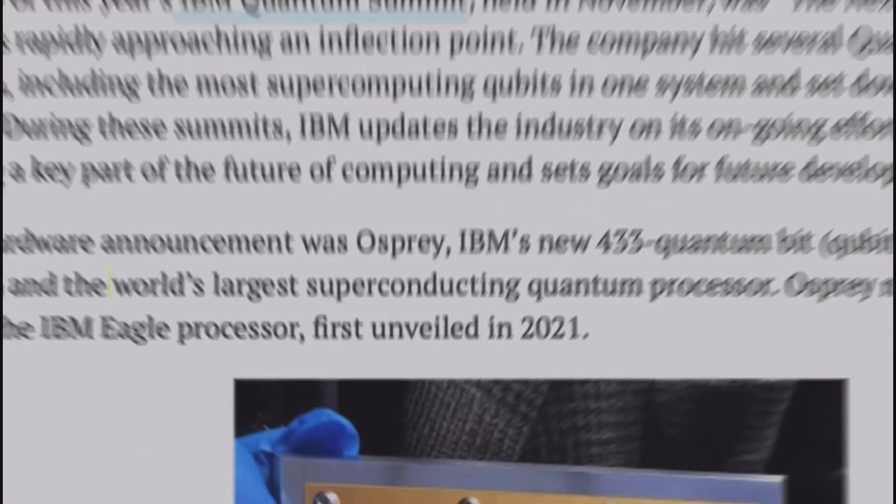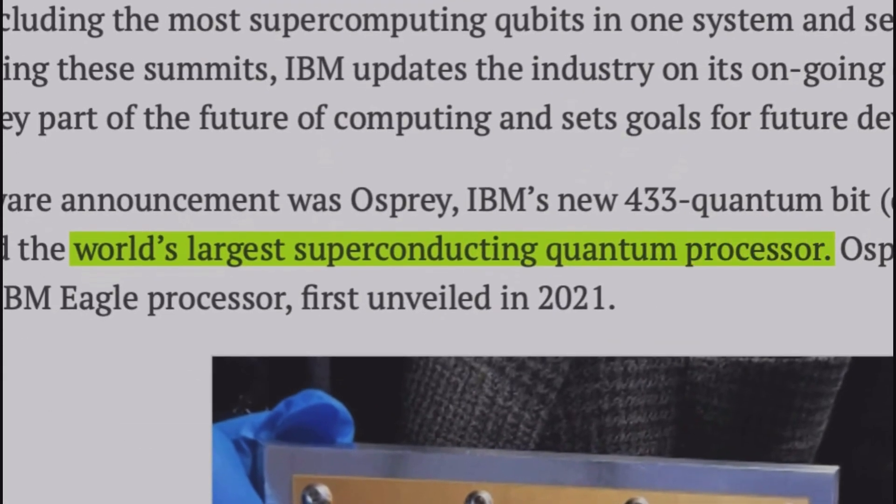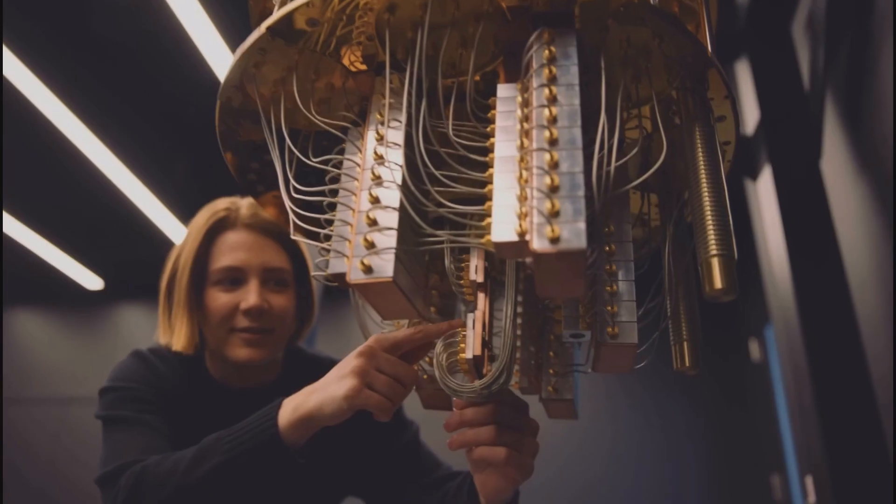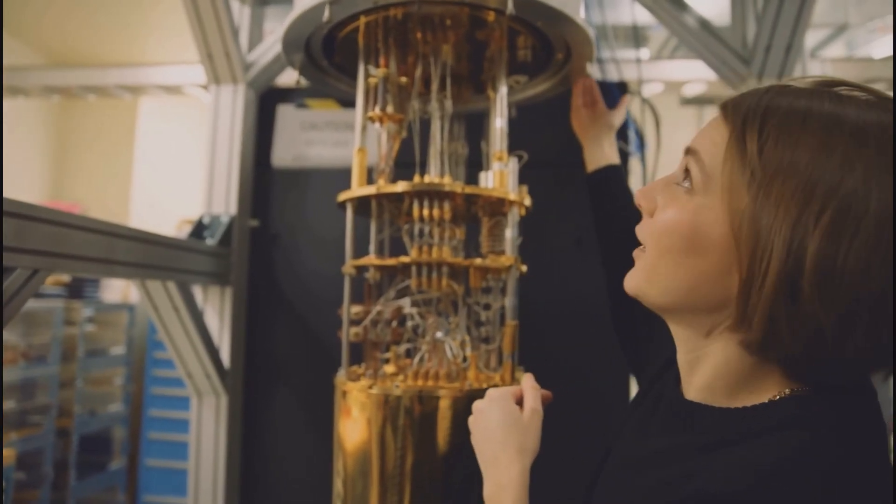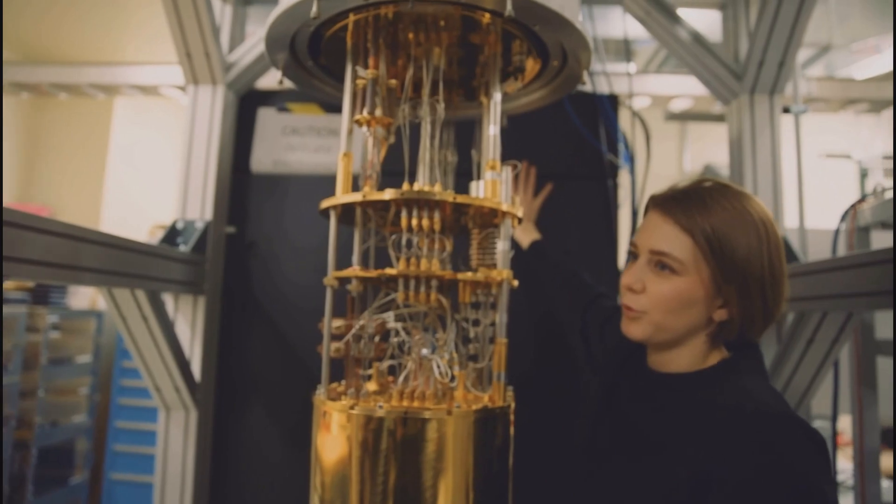현재 IBM의 오스프리라는 양자컴퓨터는 양자컴퓨터 중 최고로 많은 433큐비트를 자랑한다고 한다. IBM 수석 부사장 겸 리서치 총괄 책임자인 다리오 길박사는 새로운 433큐비트 오스프리 프로세서를 통해 이전에 해결할 수 없었던 문제를 해결하는데 양자컴퓨터를 활용하게 될 시점에 좀 더 다가서게 됐다라고 말하고 있다. 또한 IBM 관계자는 2025년 이후에는 4천 개 이상의 큐비트를 목표로 하면서 진화 중이다라고 하며 현재 물리적 전자장치가 가진 성능을 넘어설 것으로 전망된다고 한다.